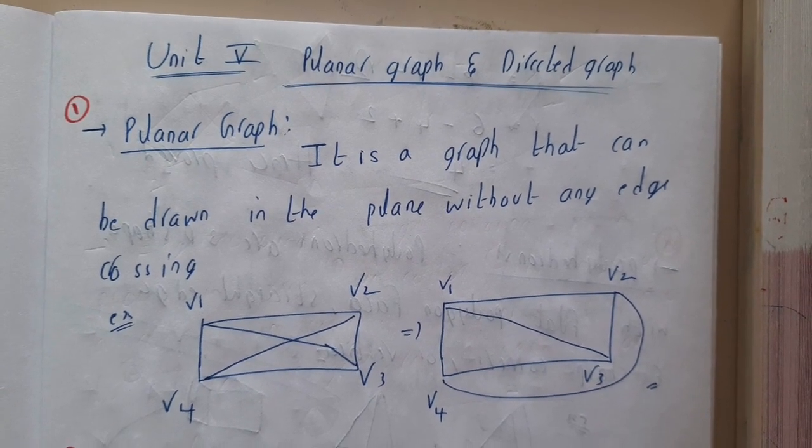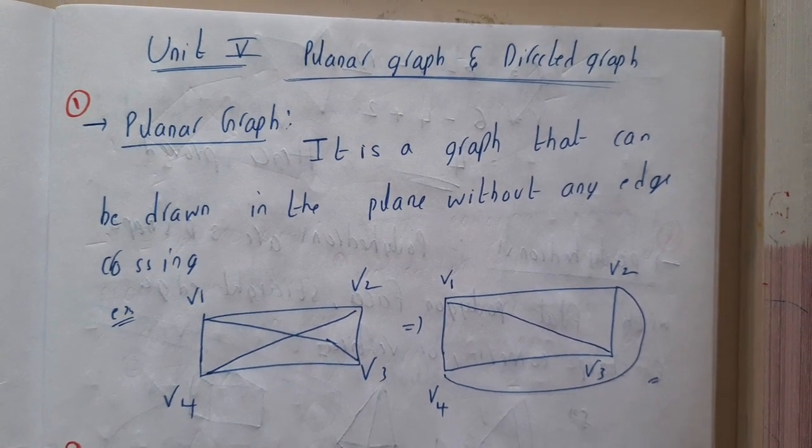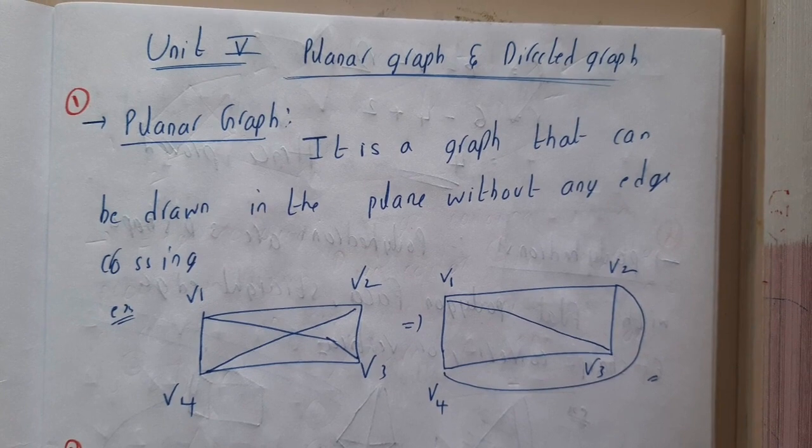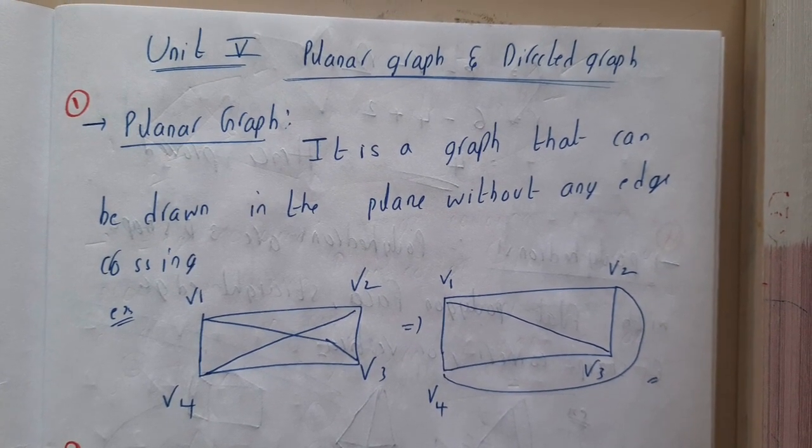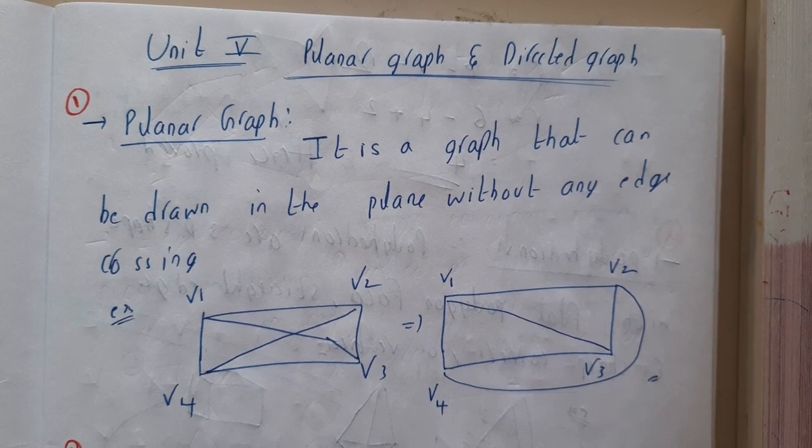Hello guys, we are back with our next lectures. In this series, we are going to start the fifth unit of graph theory in which we'll be discussing planar graphs and different types of directed graphs, like Hamiltonian directed graphs and Euler directed graphs and all those things.